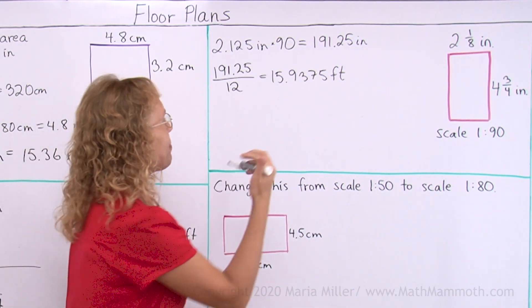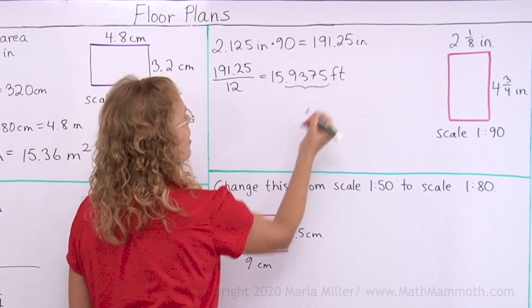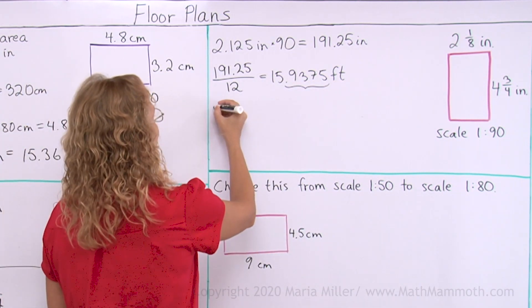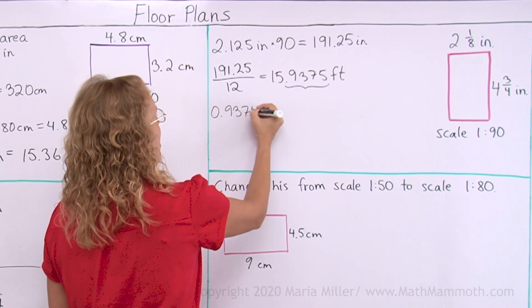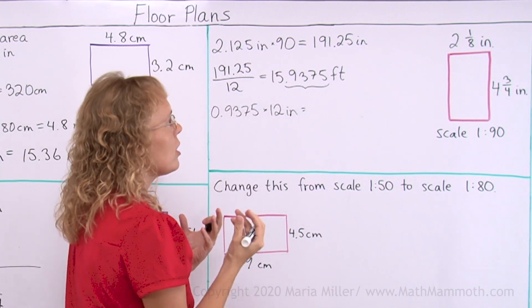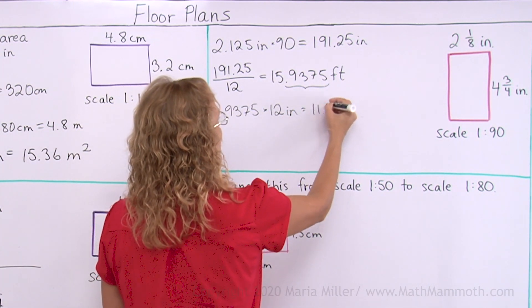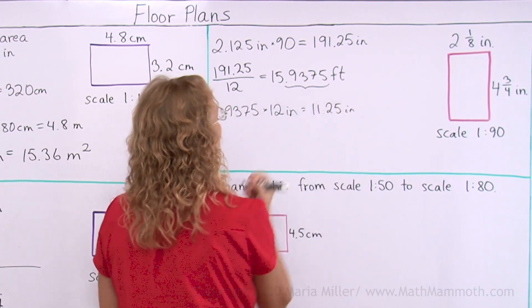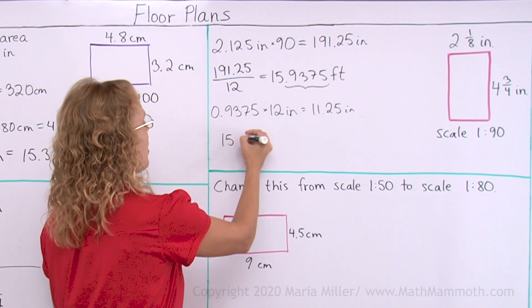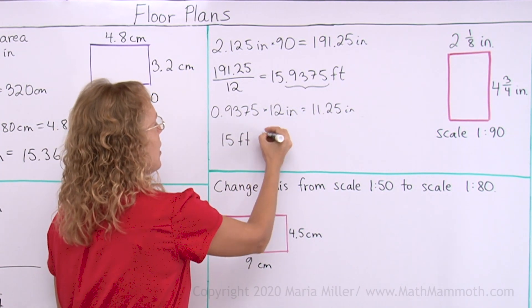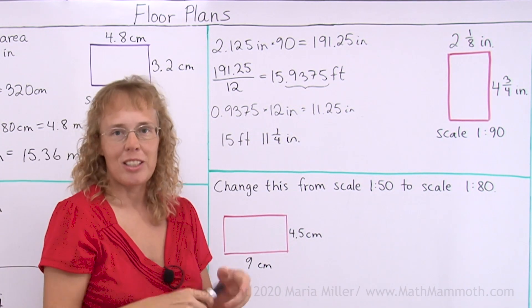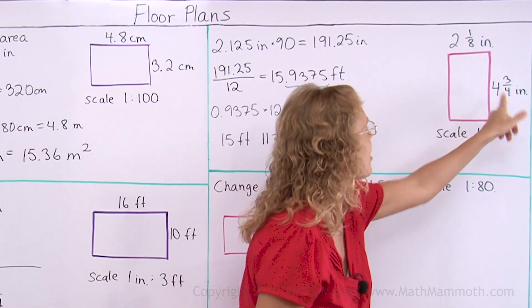To do that, you need to figure out this decimal part. How many inches is it gonna be? So you take the decimal part alone and multiply it by 12 to get how many inches. And you will get 11.25 inches. So, all in all, we will get that this side measures 15 feet and 11 and 1 fourth inches. And you would repeat all these steps for this other side also.